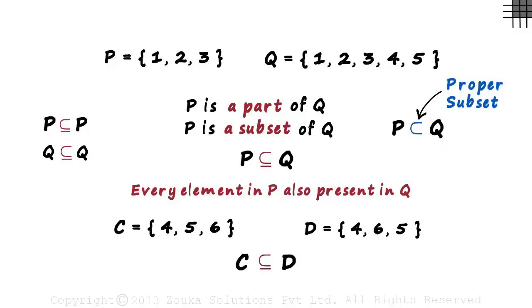Can we say C is a proper subset of D? Think about it. That would be incorrect since there is no element in D which is not a part of C. There has to be at least one such element. That's the only difference between a subset and a proper subset.